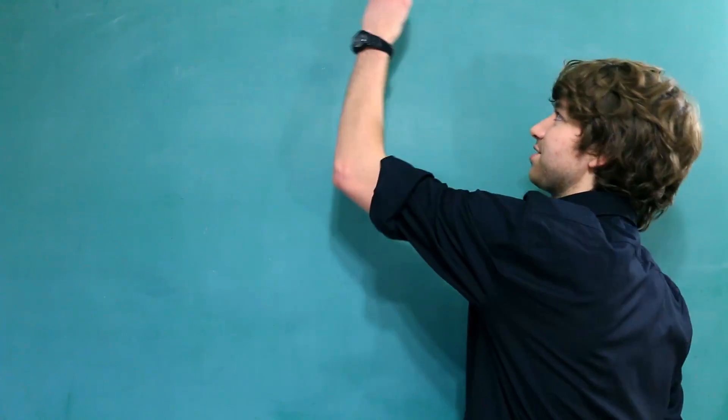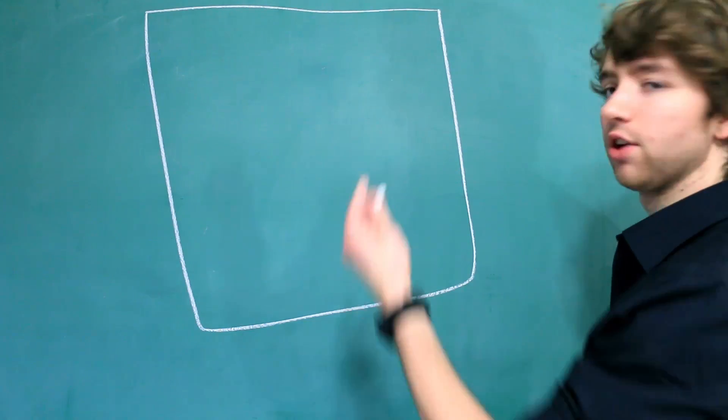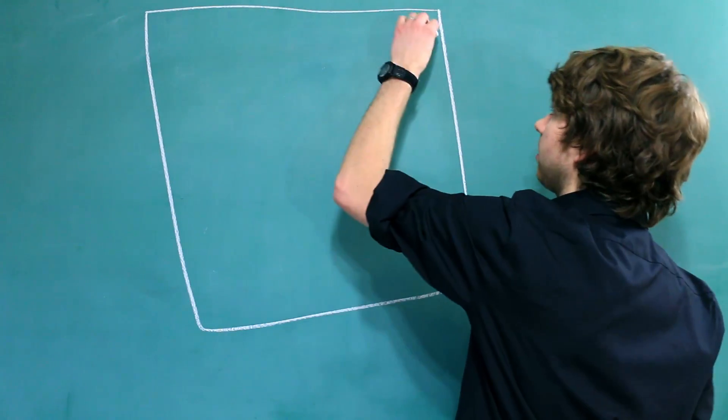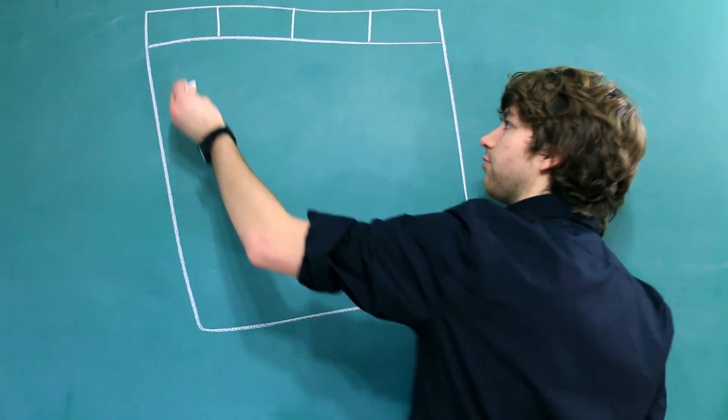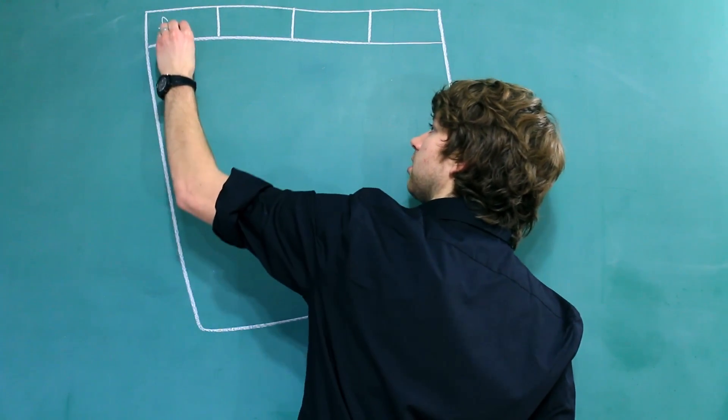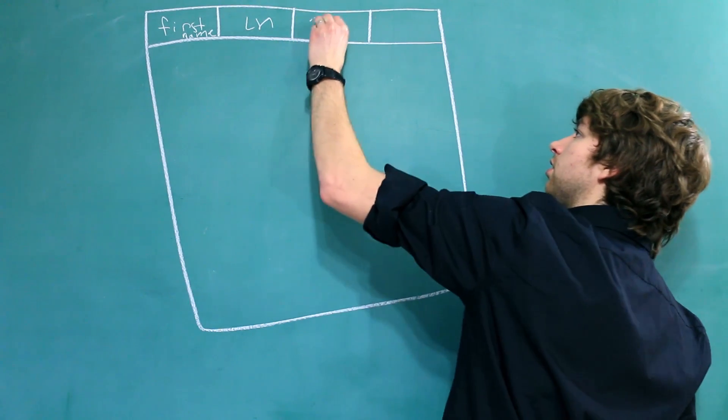So a table is drawn as a square, and then we have columns listed across this way. And we'll often give column headers. So for example, we could say first name, last name, phone, email.